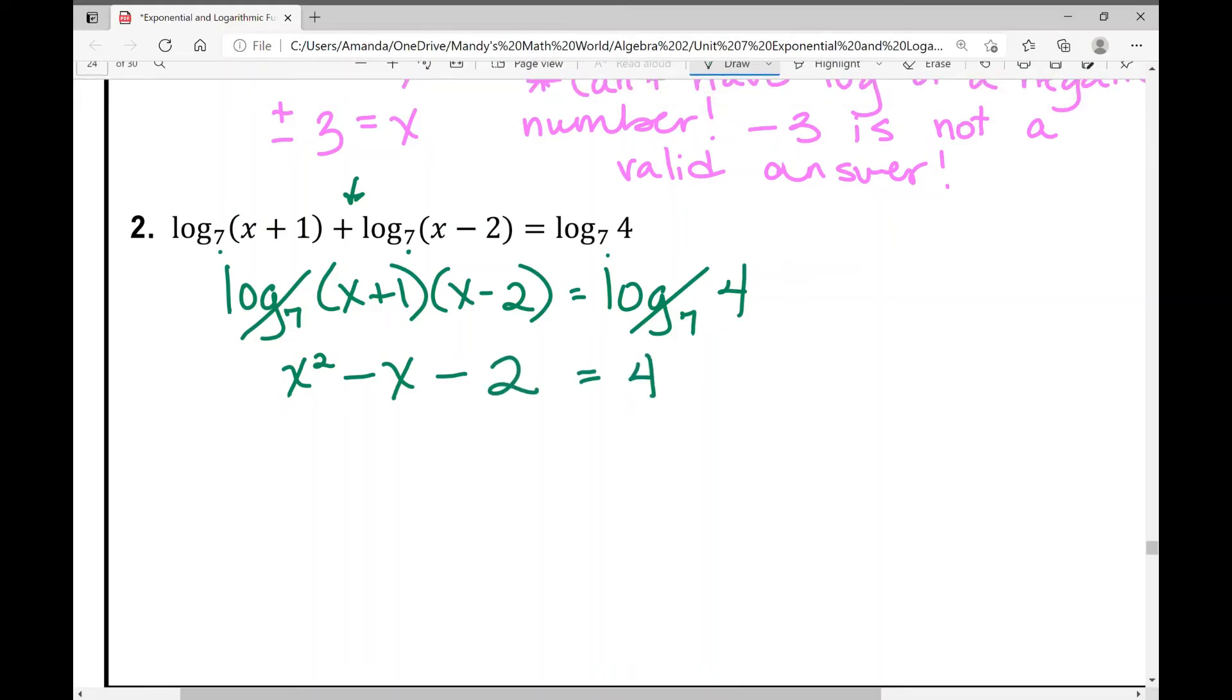Now I've got a quadratic. How do we solve quadratics? We set it equal to 0, factor, find our solutions. I need to move this 4 to the other side by subtracting 4. So I get x squared minus x minus 6 equals 0. Now we're going to factor this. Two numbers that multiply to negative 6 add to negative 1. x minus 3 times x plus 2 equals 0.